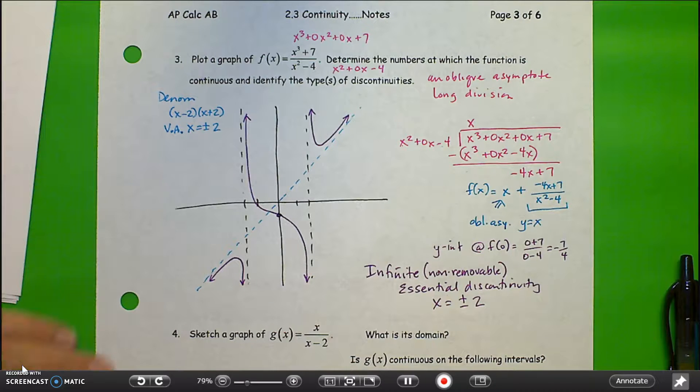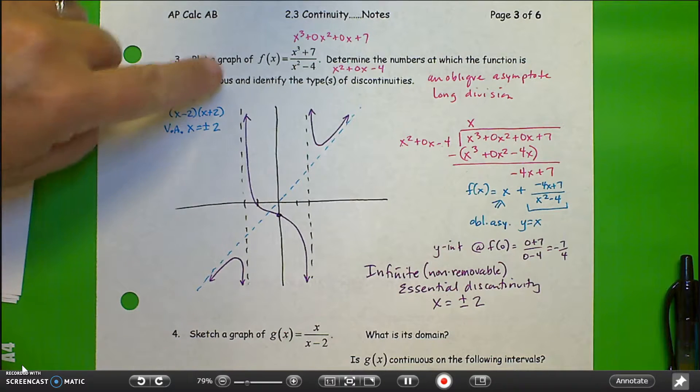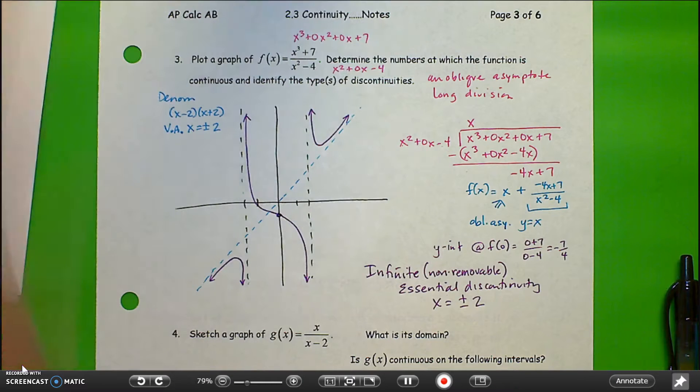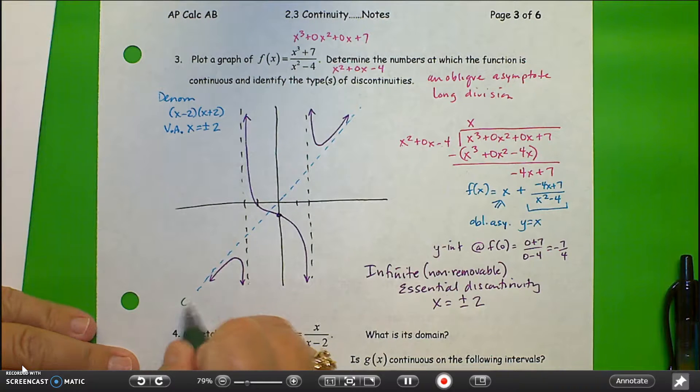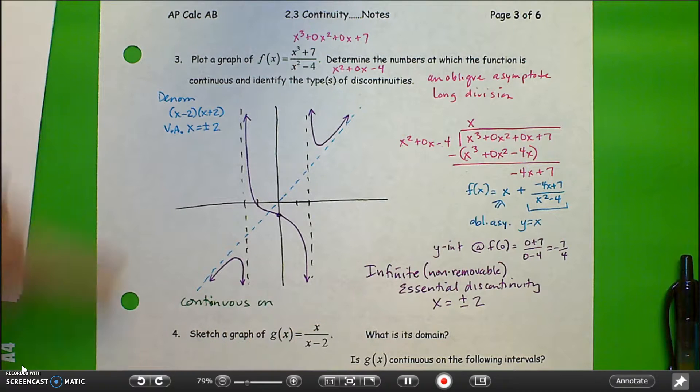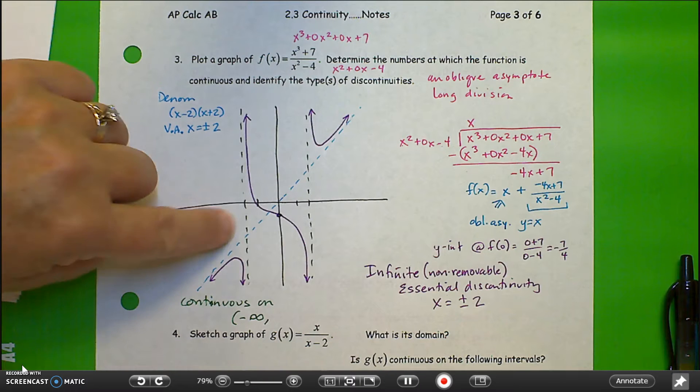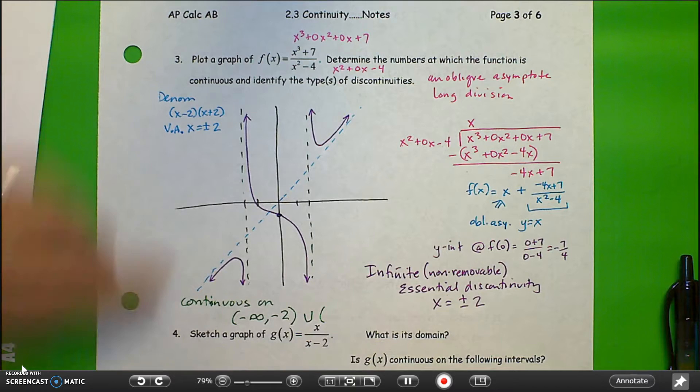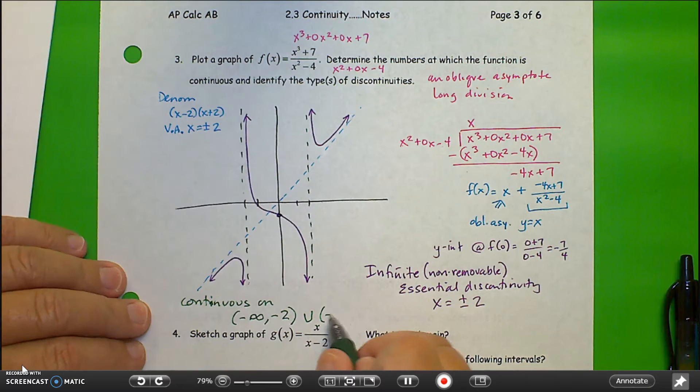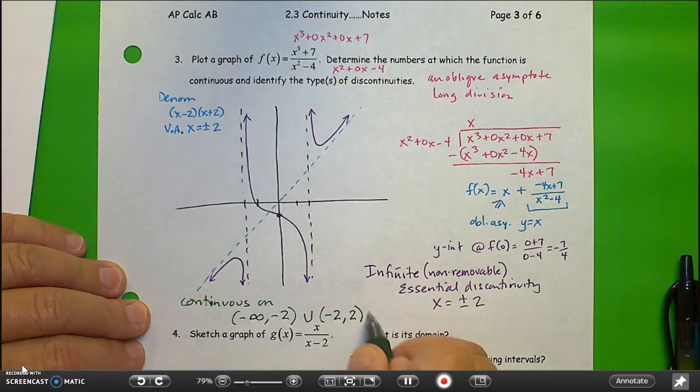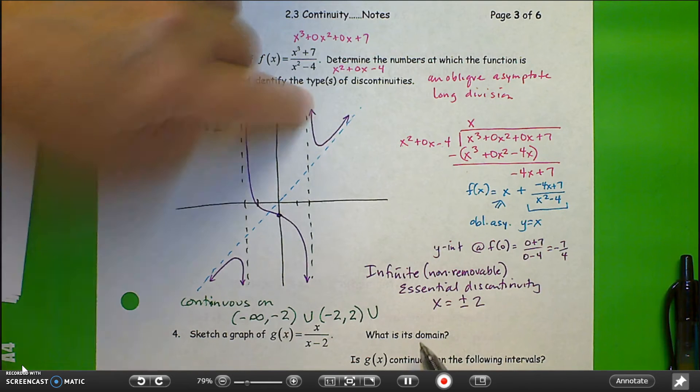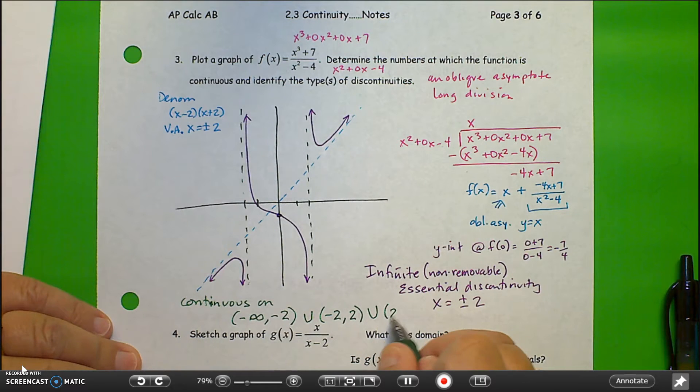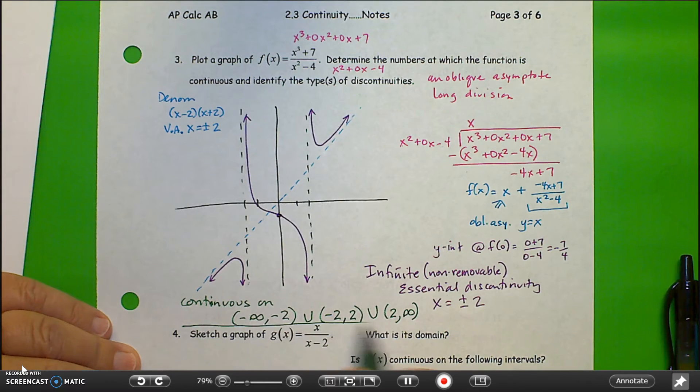The problem also asks us to determine the numbers at which the function is continuous. So I'll say it's continuous on, starting from the left, negative infinity all the way up to but not including negative 2. Also from negative 2 to 2, not including either of those. And then the third position would be beyond 2 up to infinity. So this is where it's continuous.